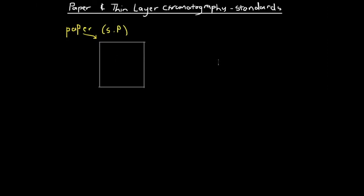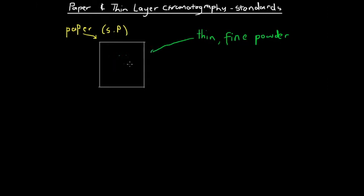In thin layer chromatography, we have a piece of cardboard, but the stationary phase is a thin, fine powder that covers the cardboard, giving it a thorough, clear coating. So the layer of fine powder is the stationary phase, and the cardboard is really just there to carry that powder.